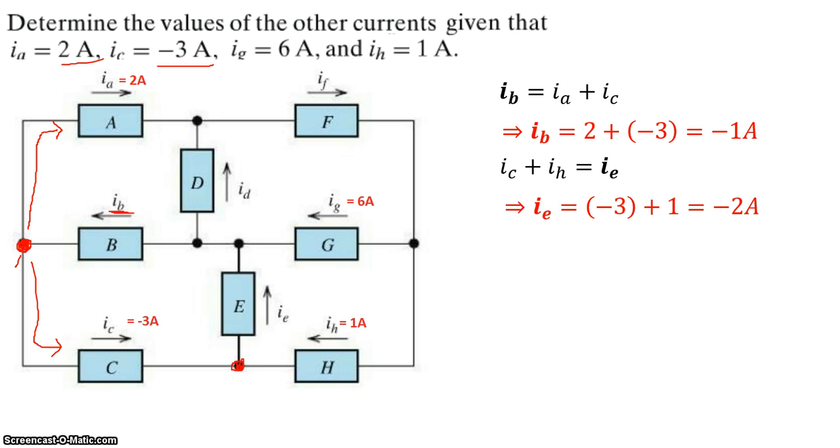Let's take a look at this node right here. Although in this particular circuit picture, it looks like there are two separate nodes, since there is no element between these two nodes, they are actually the same node. This big node is one single node. The currents coming into this big node are IE and IG. Currents going out of that node are ID and IB.